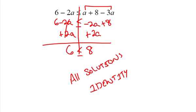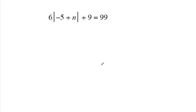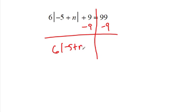Next one. Absolute value equations. Remember the first thing you have to do about absolute value equations is get everything outside the absolute value bars to the other side. So I have plus 9. I have multiply by 6. So I'm going to subtract 9 from both sides. 6 times the absolute value of negative 5 plus n equals 90.